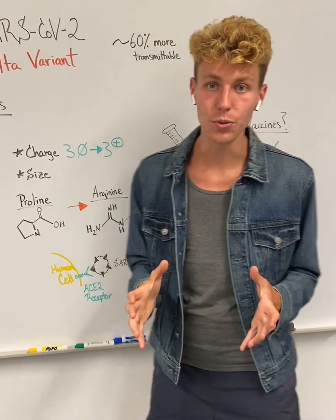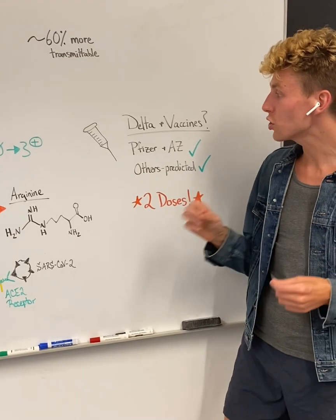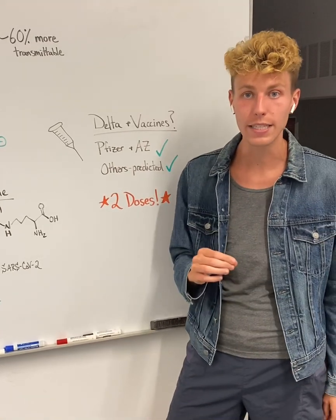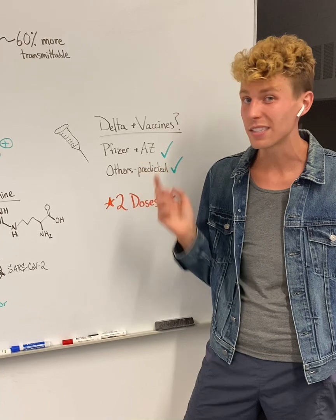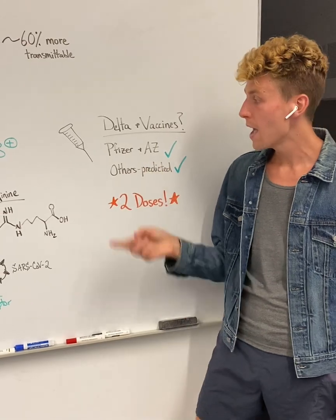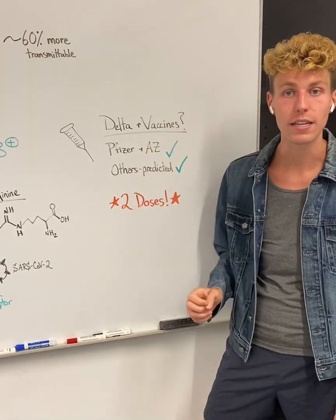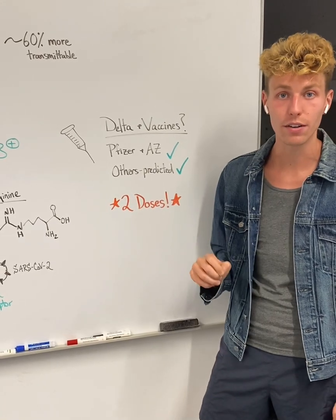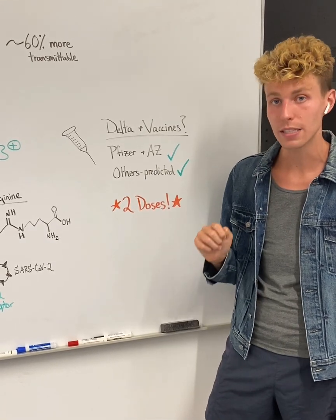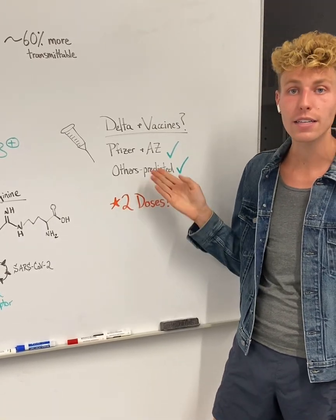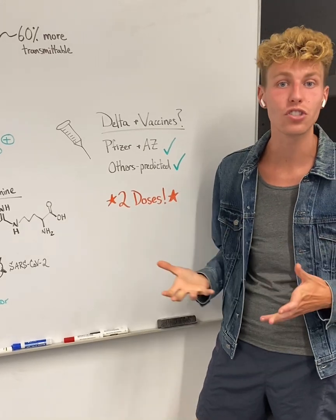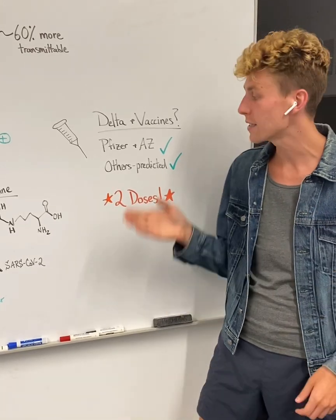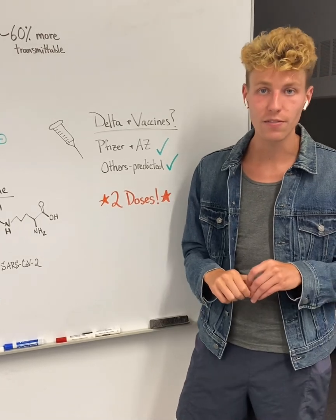There is good news, as early trials looking at vaccines against COVID-19 and their effectiveness against the Delta variant show that the Pfizer and AstraZeneca vaccines have been shown to be effective at neutralizing the Delta variant. Other vaccines such as Moderna or Johnson & Johnson are still being tested, but it's hypothesized that they'll also be equally as effective.